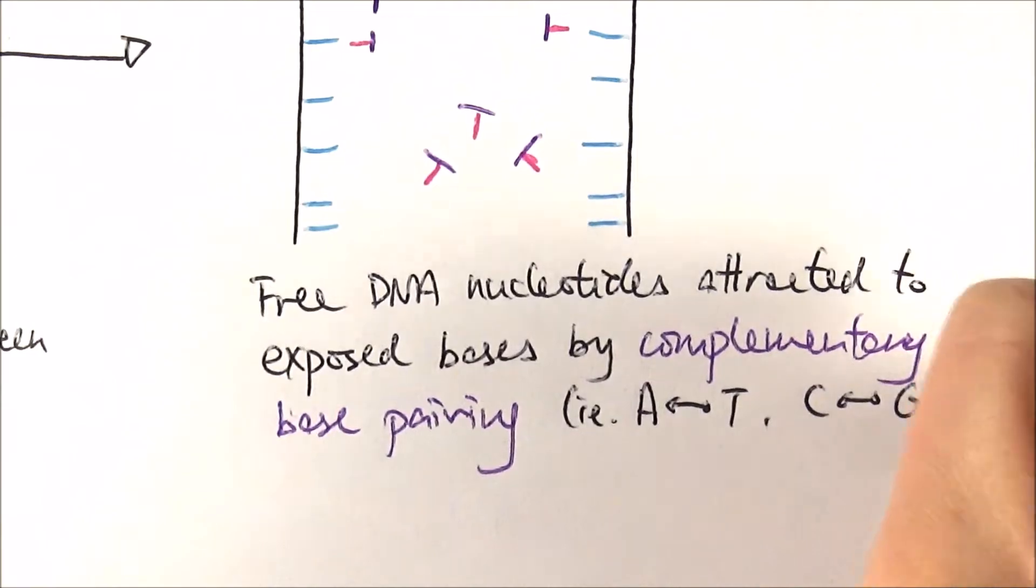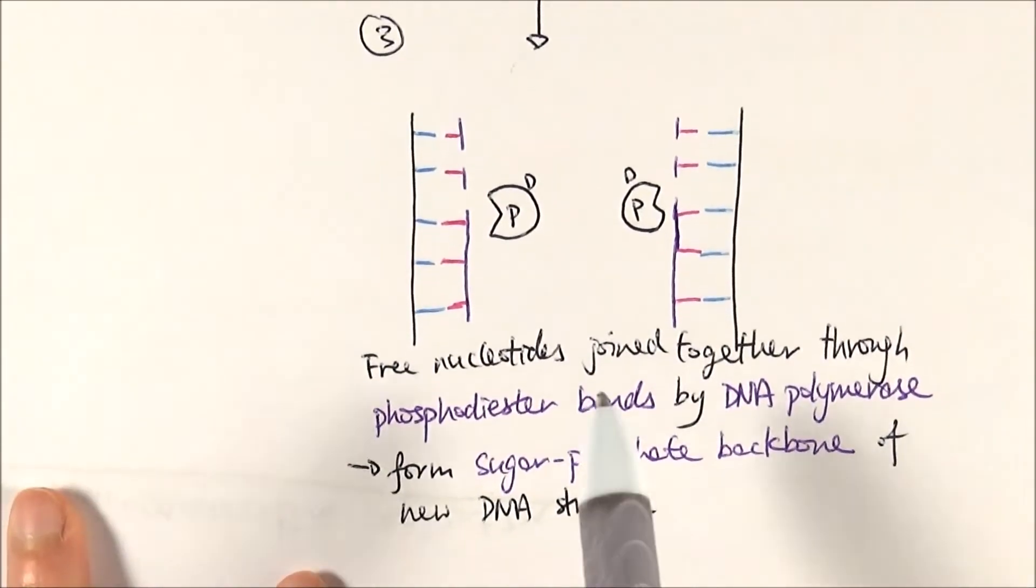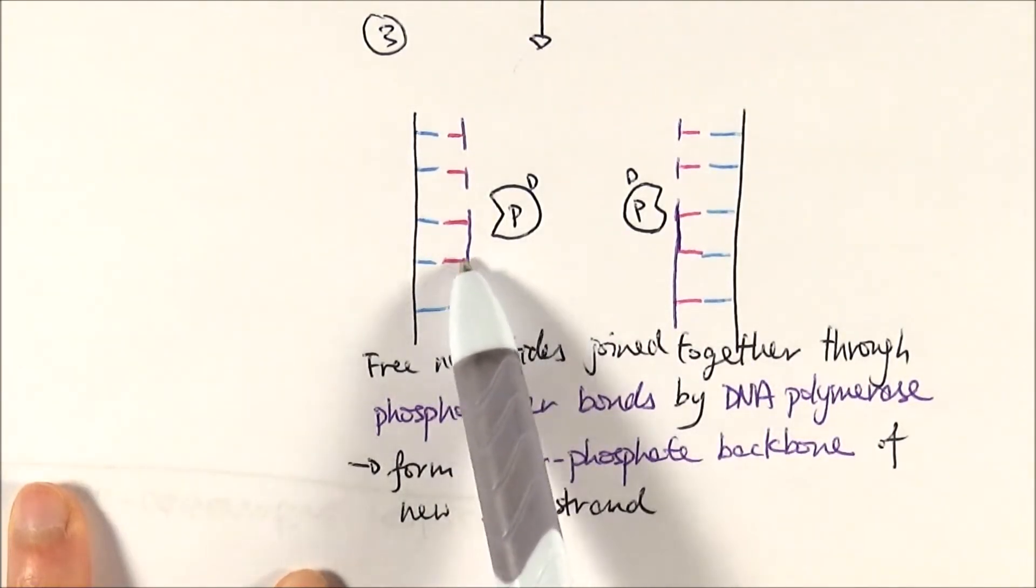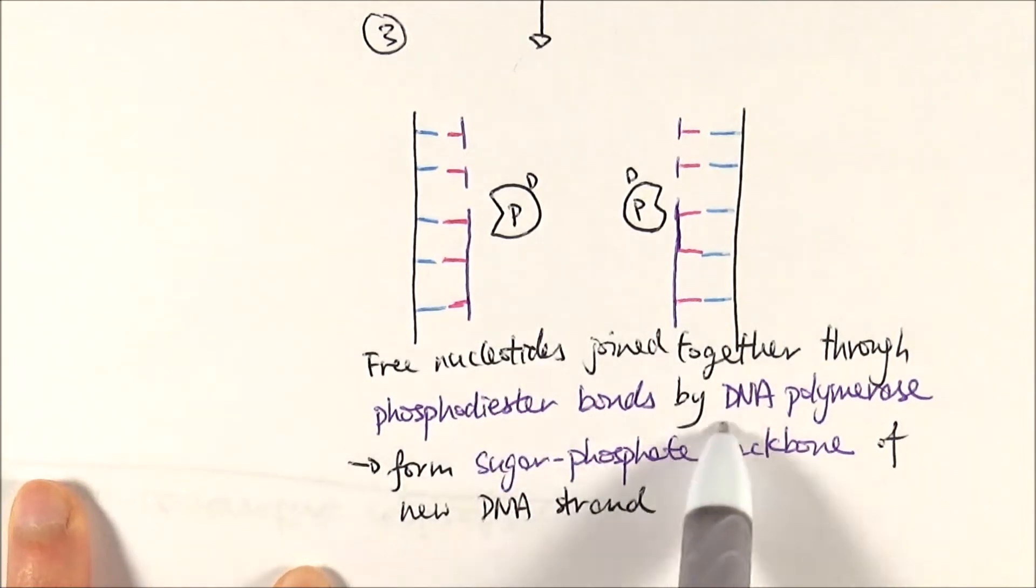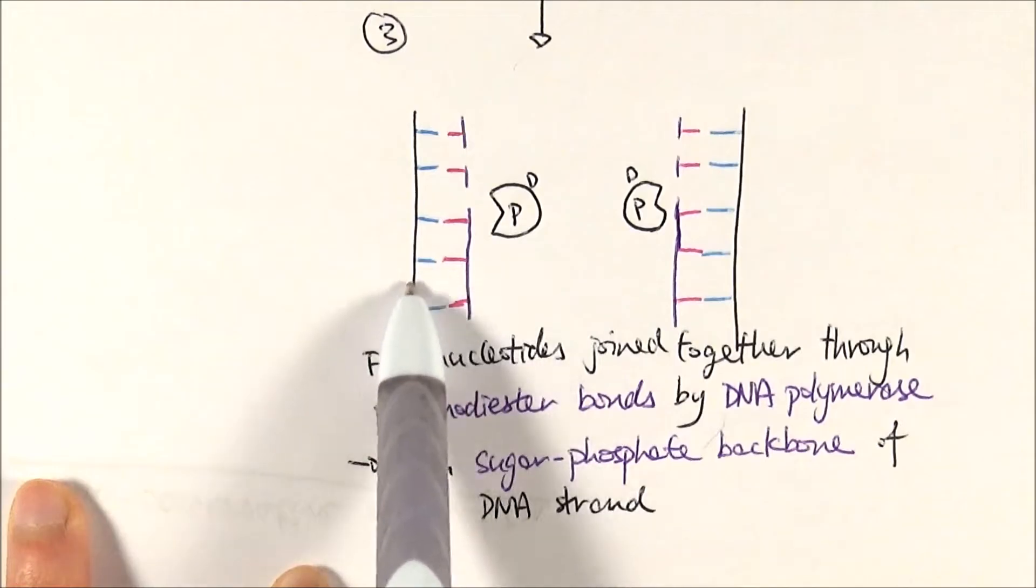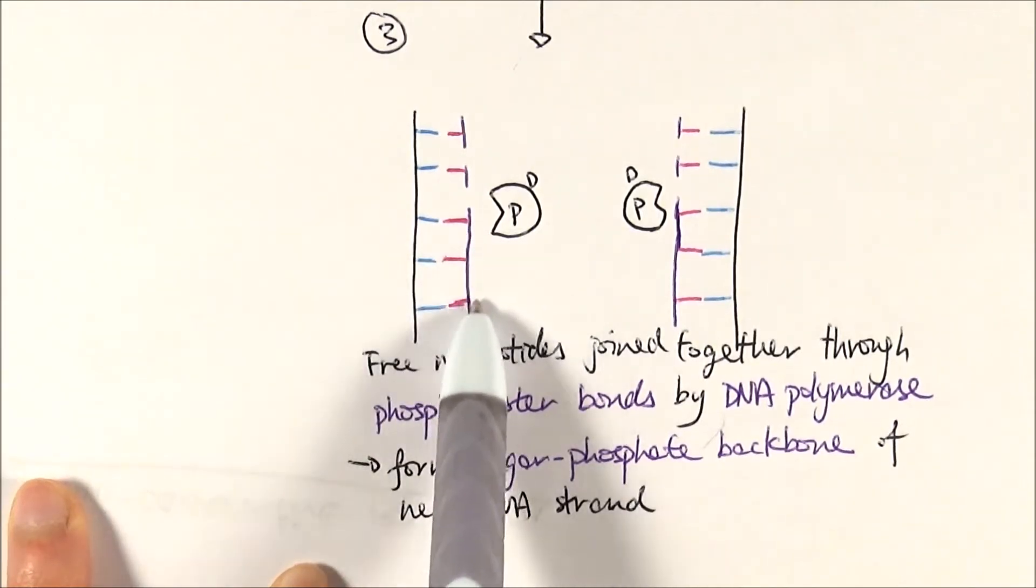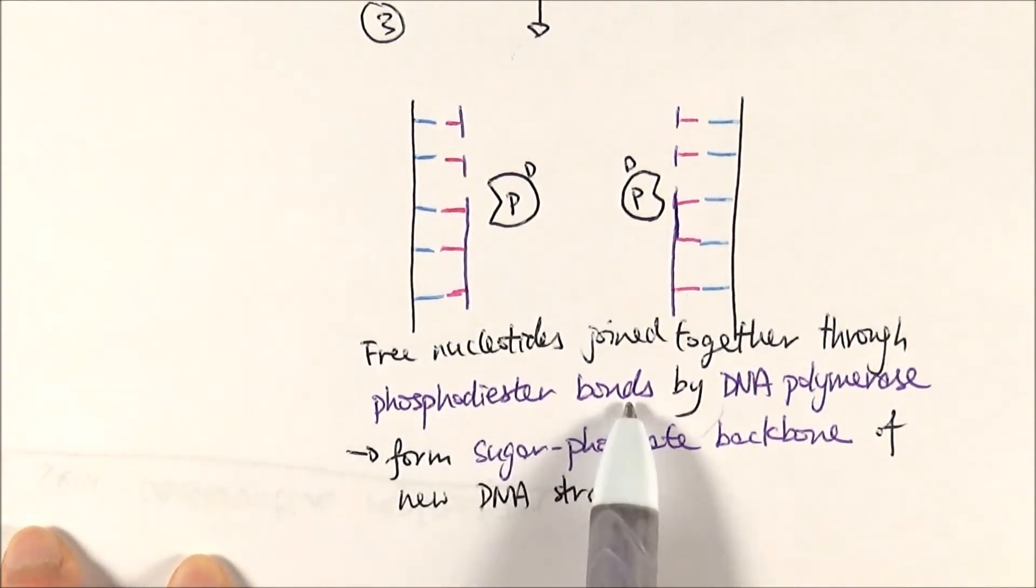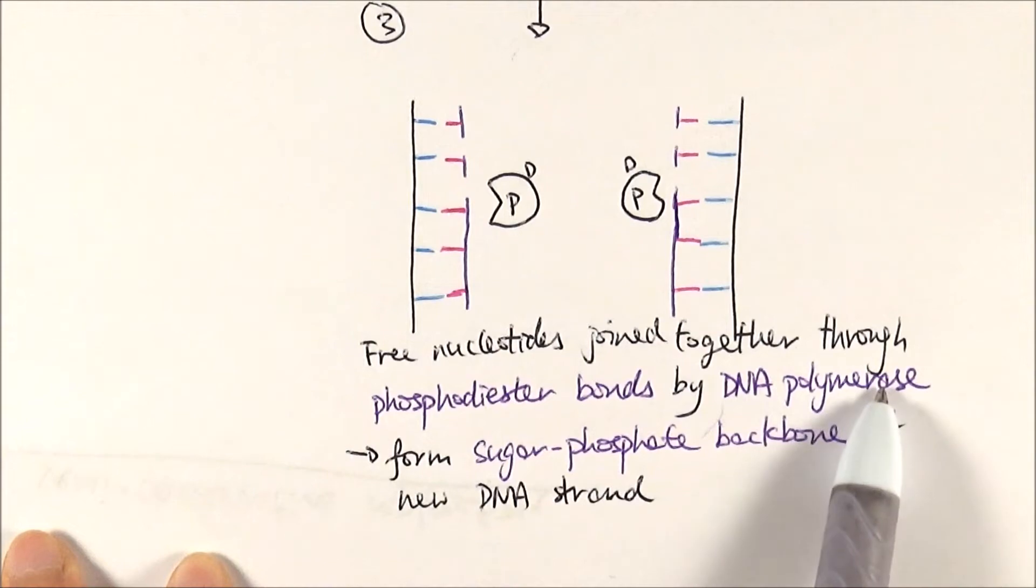We have our old template strands and our new strands forming from free nucleotides, which need to be joined together properly. DNA polymerase catalyzes the formation of phosphodiester bonds to form the sugar phosphate backbone. Key terms include phosphodiester bonds, DNA polymerase, and sugar phosphate backbone. Remember: polymerase relates to polymer - DNA is a polymer, so polymerase is the enzyme that makes the polymer.